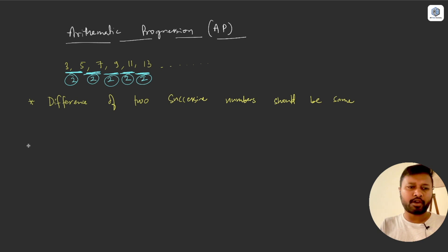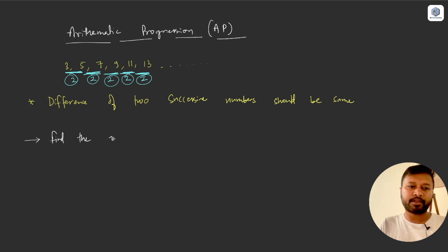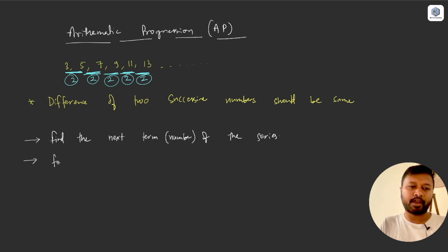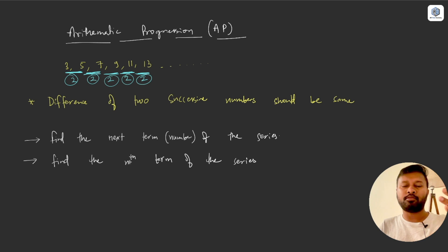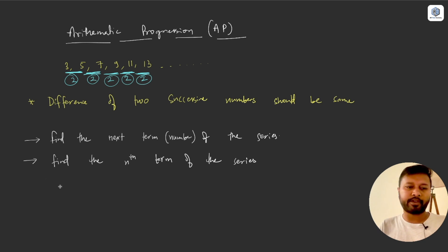There are several types of questions that can be asked from AP. First, you can be asked to find the next term or number of the series. Second, they can ask you to find the nth term — where nth can be the 10th, 28th, 30th, or any number — meaning they give you a series and ask what is the 15th or 20th term.